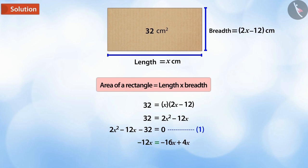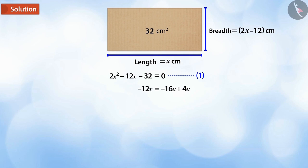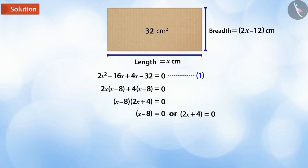Minus 12x is equal to minus 16x plus 4x. On solving, we see that x minus 8 is equal to 0 or 2x plus 4 is equal to 0.